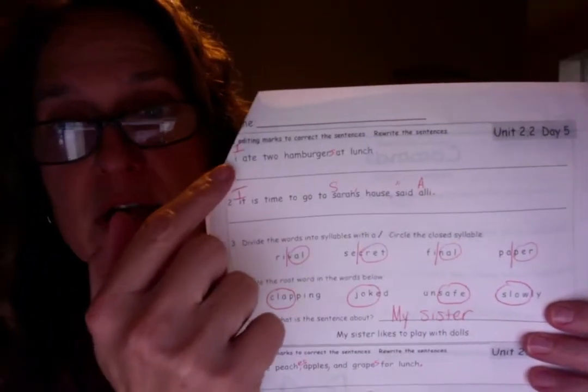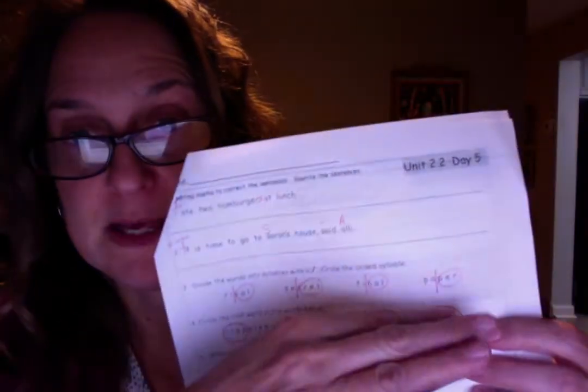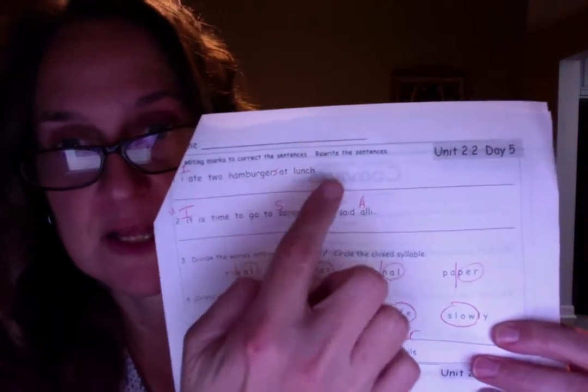I ate two hamburger at lunch. That should be hamburgers, plural. I should be capitalized. It's the first word in the sentence, but when you're talking about I, the pronoun, it's capitalized no matter where it is in the sentence. And a period at the end.